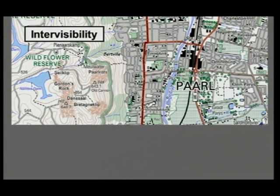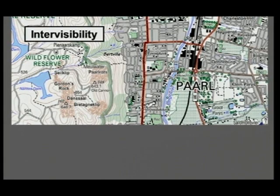Here we've got the map of PAL. Here we've got a school, and here we've got PAL Rock. The question is: can the learners at this school see PAL Rock? In other words, is PAL Rock visible from the school?